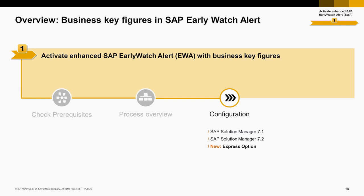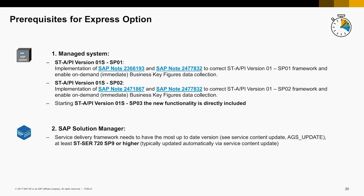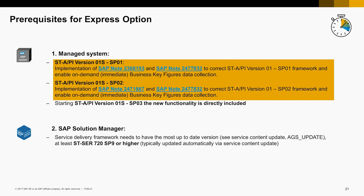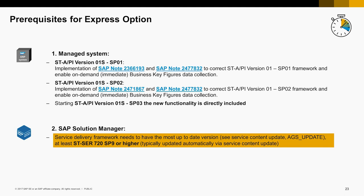Now we come to the new Express option. The SAP EarlyWatch Alert Expert mode accelerates the activation and report generation procedure to a few hours instead of waiting two to three weeks. Also, you get more transparency, with additional troubleshooting help in EWA if there are problems with the Enhanced EWA activation. For the Express option, you need to check the following additional prerequisites. For your SAP ERP system, if you are on STAPI version S Support Pack 1 or 2, you need to apply two SAP notes for the Enhanced Functionality. Starting Support Pack 3, the new functionality is directly included. For SAP Solution Manager, you need STSER 720 Support Pack 9 or higher, which is typically updated automatically via the Service Content Update, the so-called SCU.